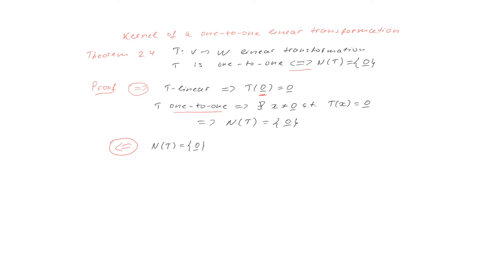Now we will prove in the opposite direction given is that kernel consists only of a zero vector. And we have to prove that T is one-to-one. And we will prove it by contradiction.